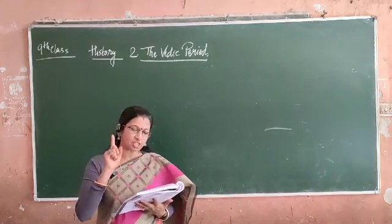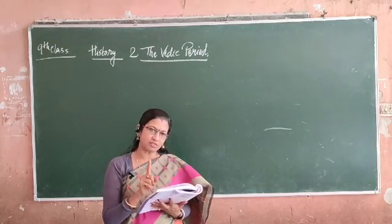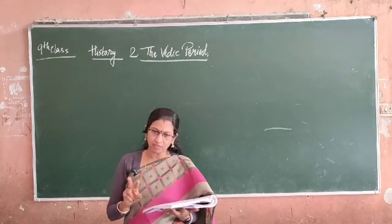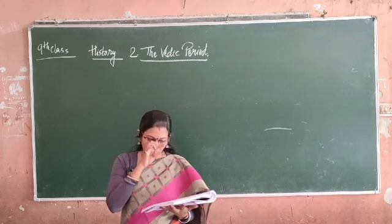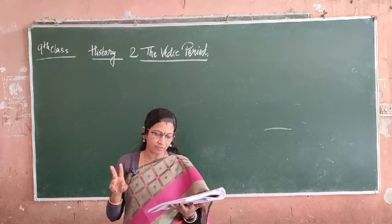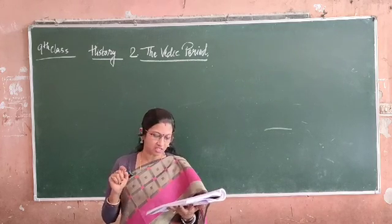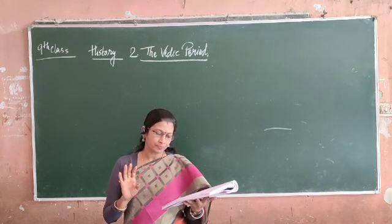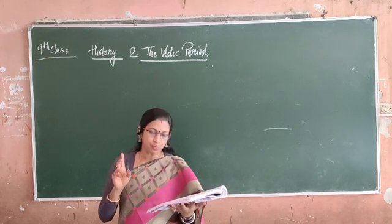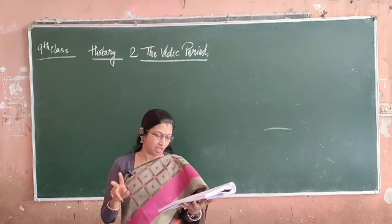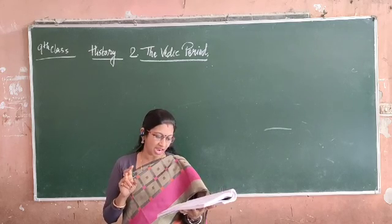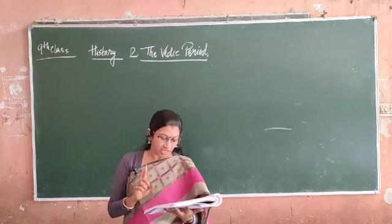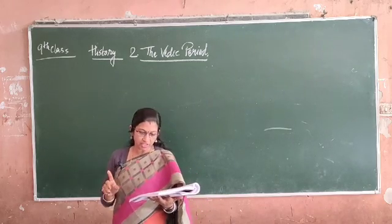To summarize, the six Darshanas are: Sankhya Shastra by Kapila, Yoga Shastra by Patanjali, Nyaya Shastra by Gautam, Vaisheshika Shastra by Kanada, Purva Mimansa by Gemini, and Uttar Mimansa by Vyasa.